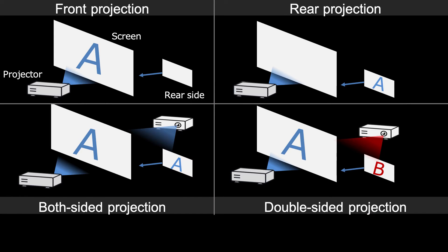Normally, each of these four methods require different types of screens and projector positions. For example, the front projection requires a front projector and an opaque screen. The rear projection requires a transparent screen. The double-sided projection requires an opaque screen and projectors on both sides.